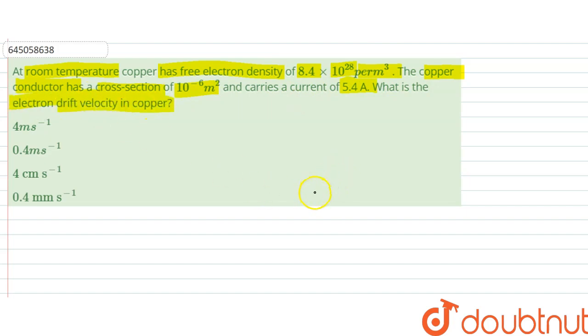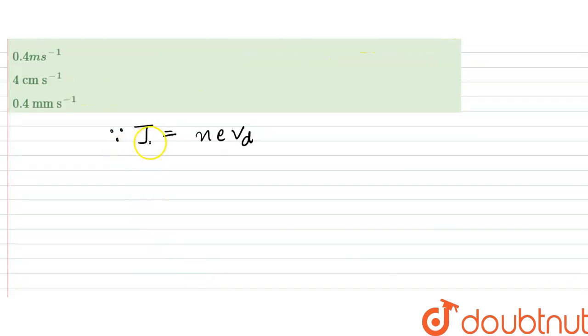The current density and drift velocities are related to each other. That is J, that is electron density, would be equal to n into e into vd. So from here what we can say is that electron current density is I by A, so that would be equal to n e vd.